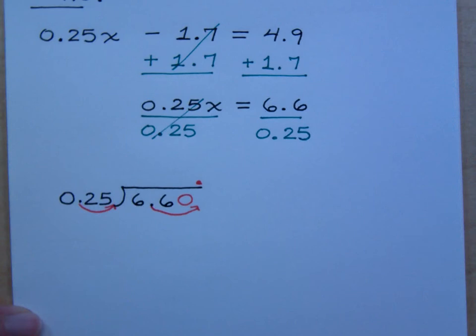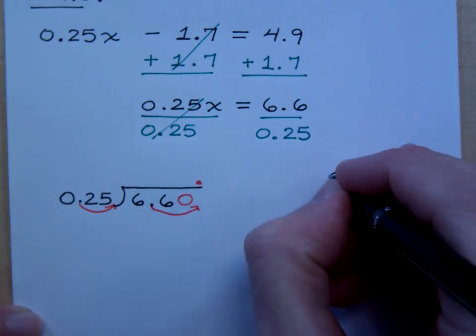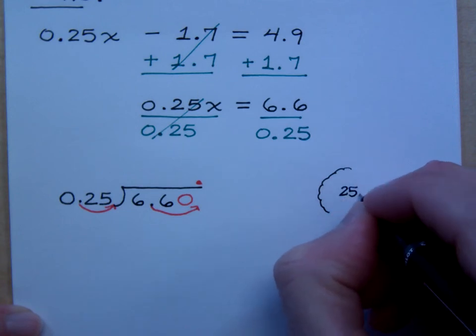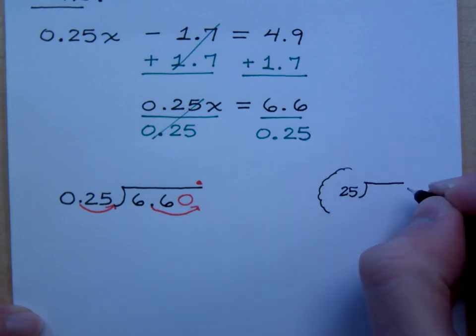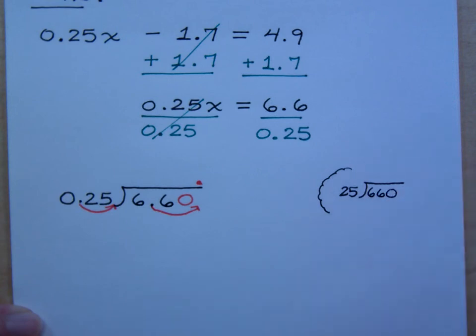And then what you're really doing is that you can kind of see this. Maybe in your mind you imagine it like this. I'm really doing 25 divided into what number? 660, right? Because we move the decimal two spots over. So this should be easy enough. Dividing by 25 is nice.